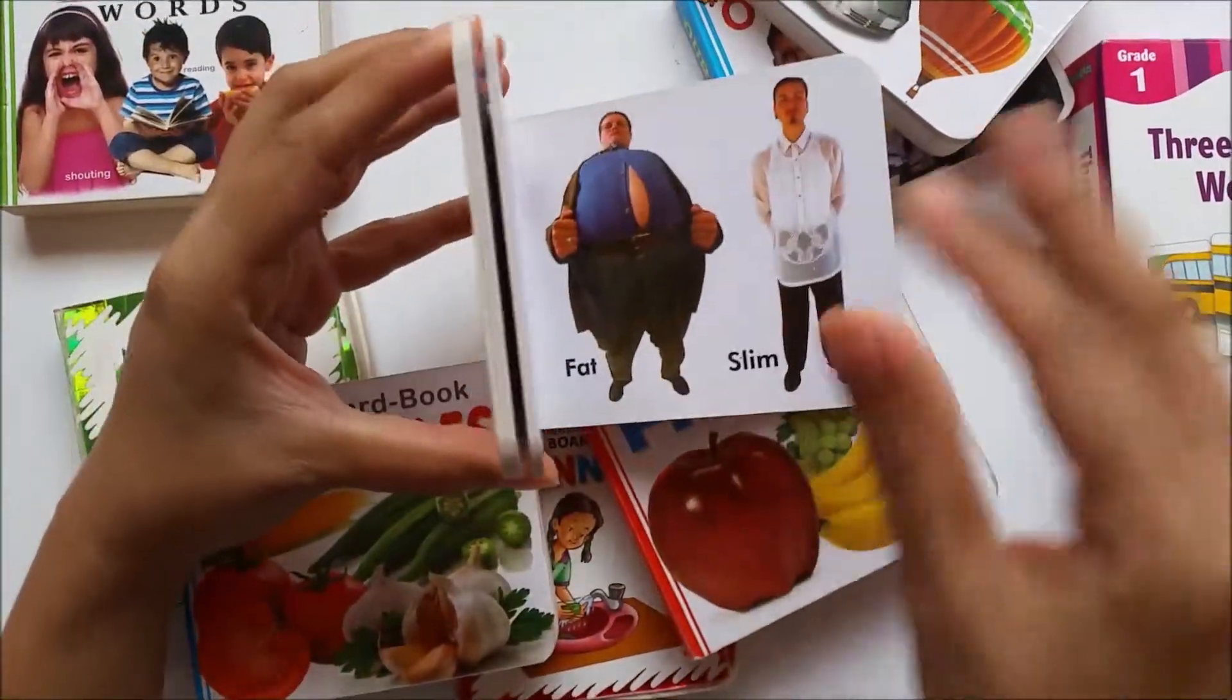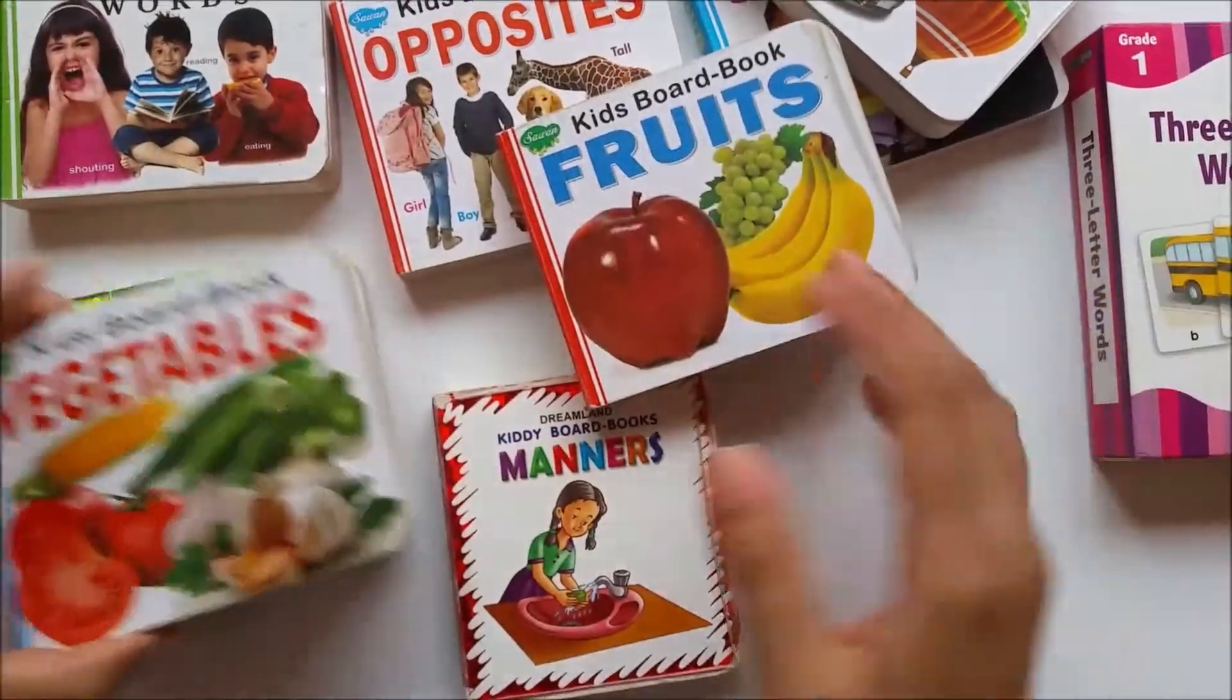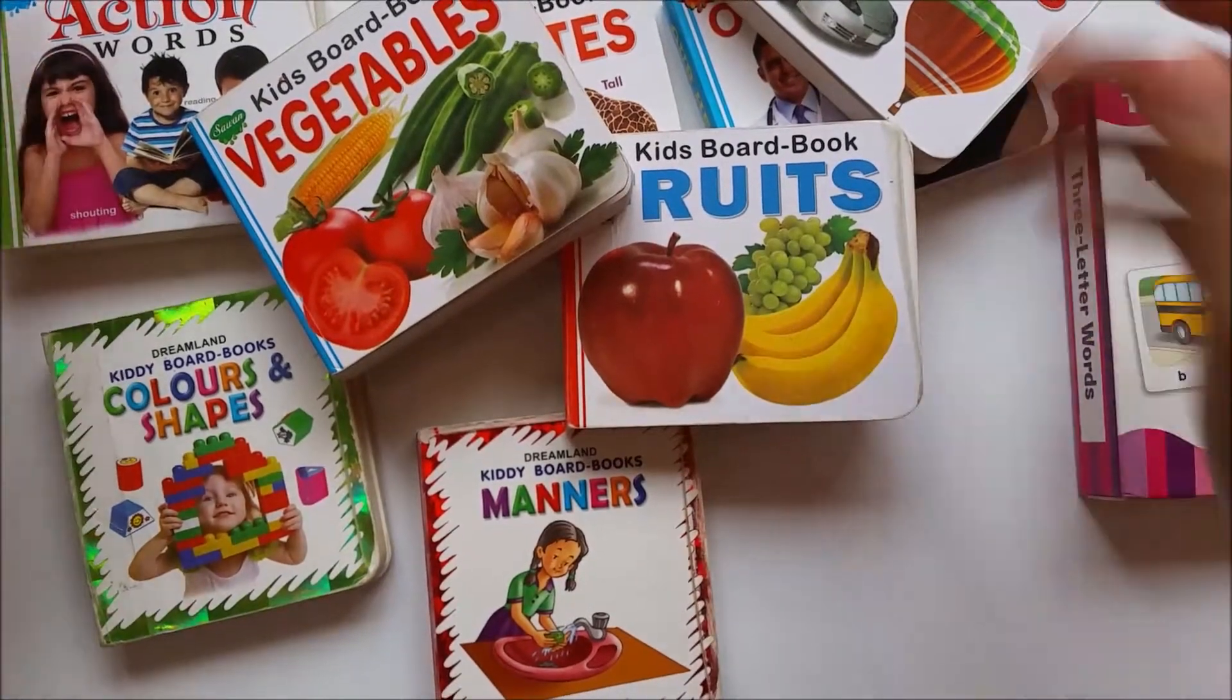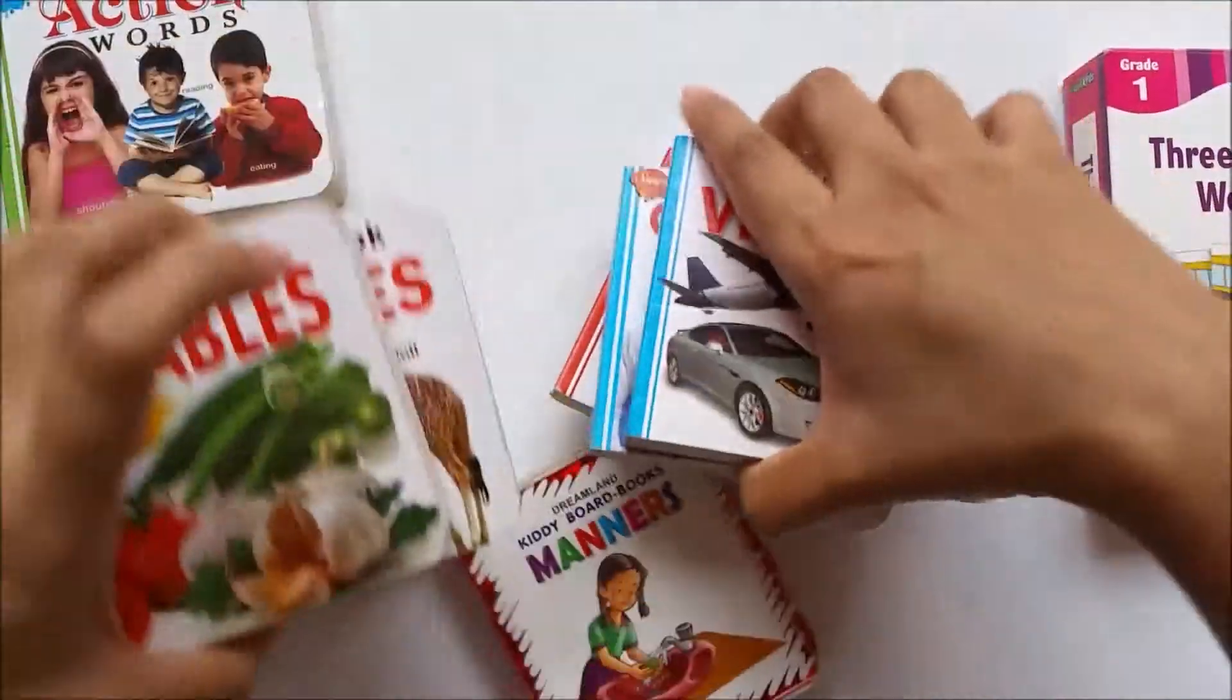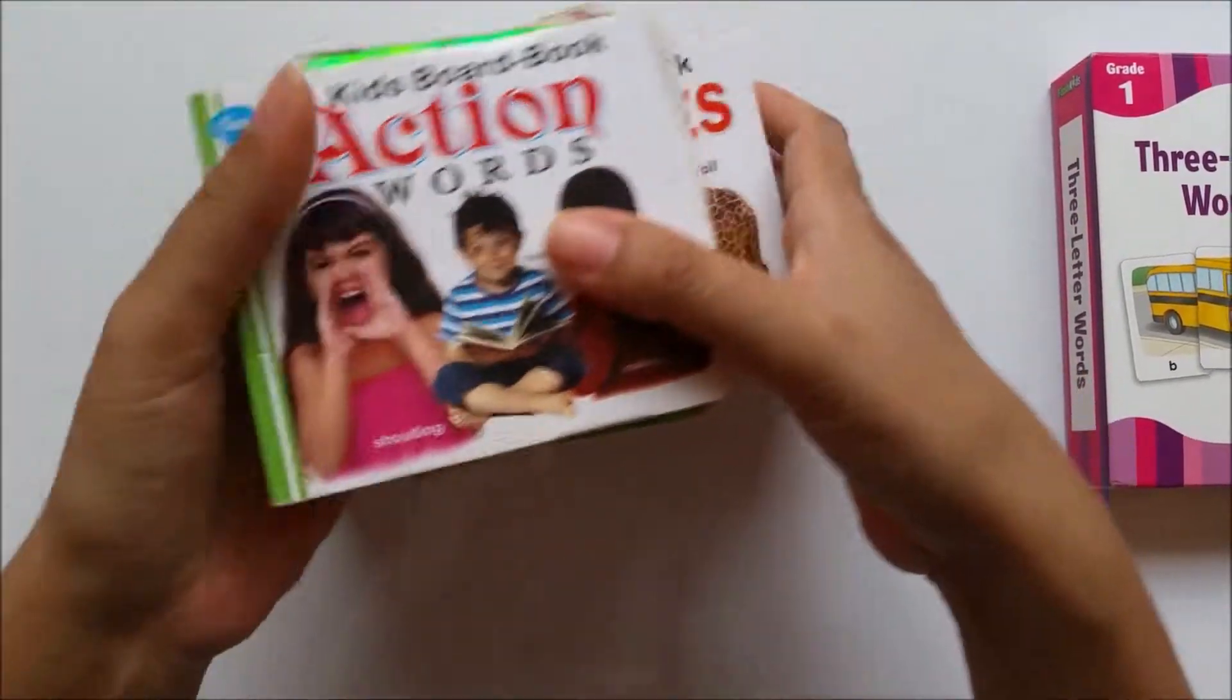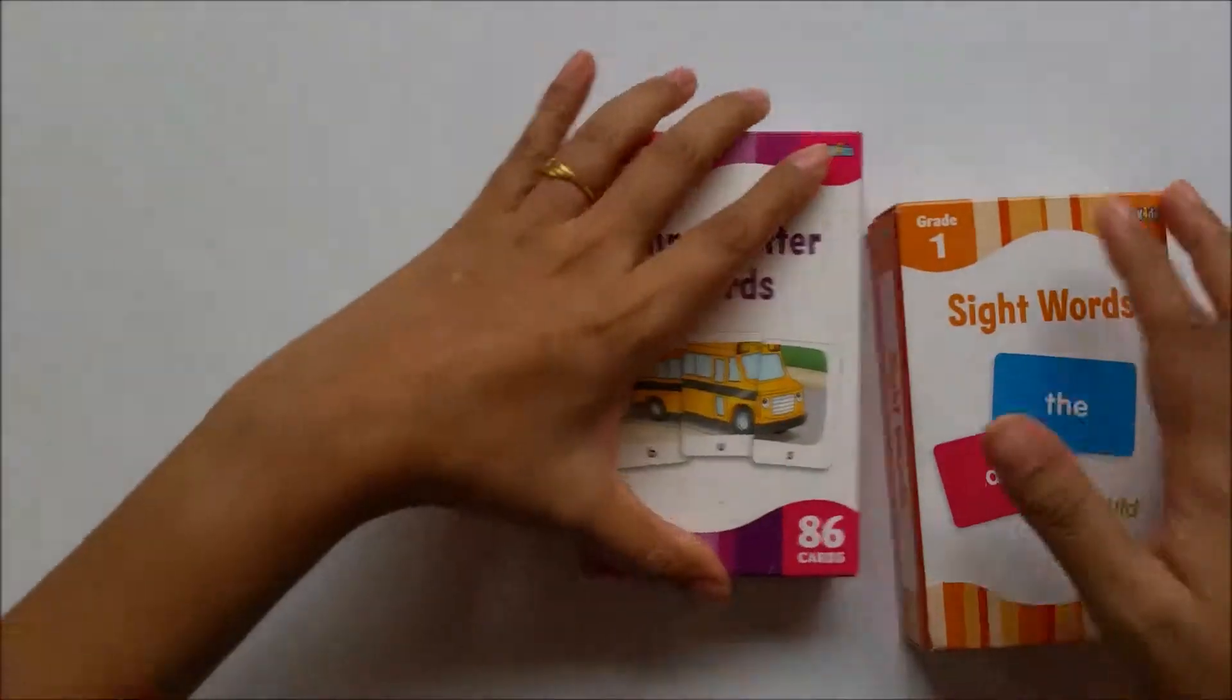So as you can see, they have board books for fruits, vegetables, manners, action words, vehicles, etc. Since now they are three years of age and very well versed with uppercase and lowercase, I was searching for a method to make them understand how to read words.